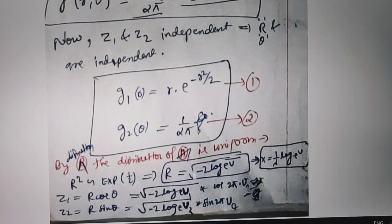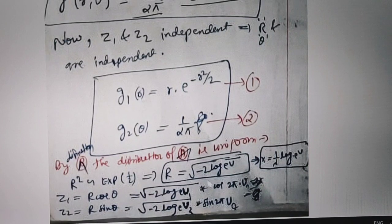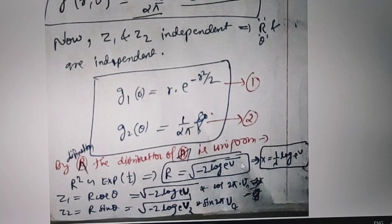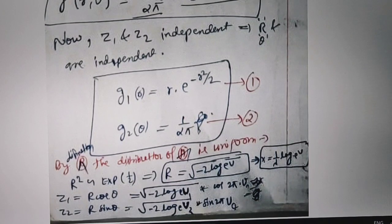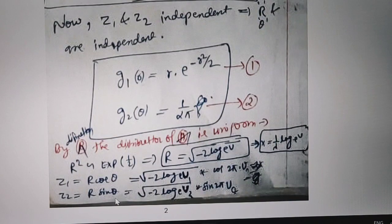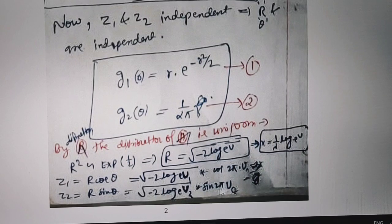By the definition, since the distribution is uniform, r squared equals the exponential, giving r equal to the square root of minus 2 times log base e. So z1 will be equal to r·cosθ and z2 equal to r·sinθ. We can write this in the standard form: z1 equals square root of minus 2·ln(v1) multiplied with cosine of 2π·v2, and accordingly z2. This is the simple derivation of the Box-Muller method.